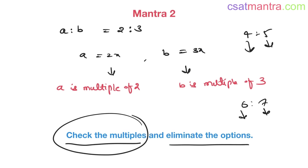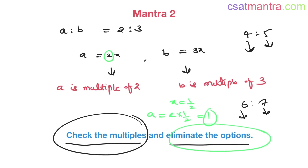This method works in most cases, but be careful: say in a particular problem x turns out to be 1/2, then a is 2 times 1/2, which equals 1. You are checking for a multiple of 2, but 1 is not a multiple of 2. So you may incorrectly eliminate options. Based on this mantra alone, you should not be marking the final answer — you have to go one more step.